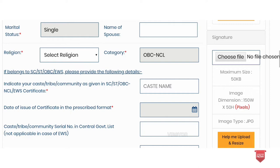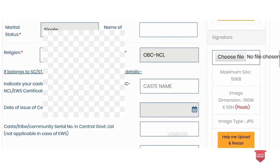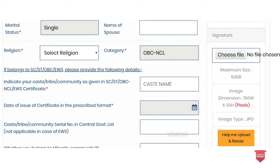The next option is to submit a caste certificate. The caste certificate will be uploaded. On the right side, choose the file. The maximum size is 50 KB, image dimensions are 50 width and 200 height, image type is JPEG. The signature must also be 50 KB, dimensions 50 width and 50 height, image type JPEG.